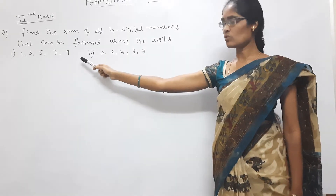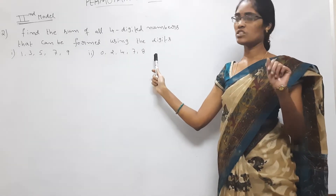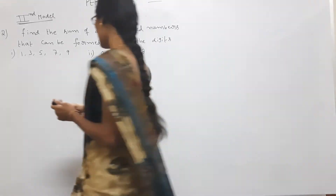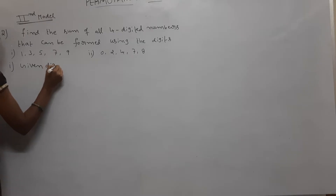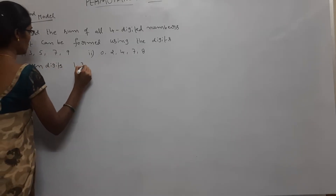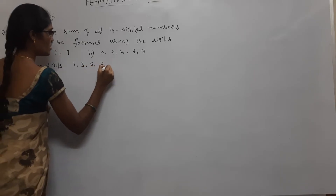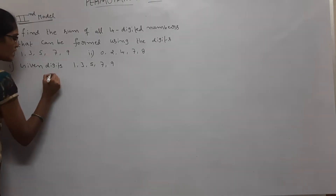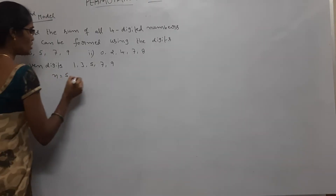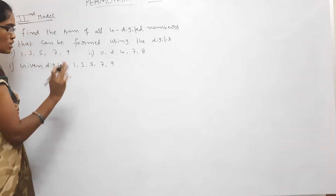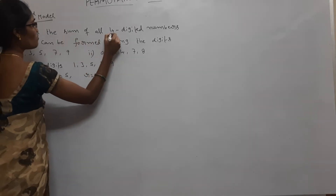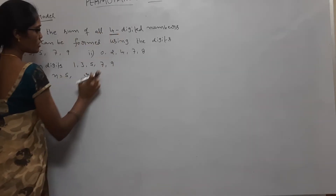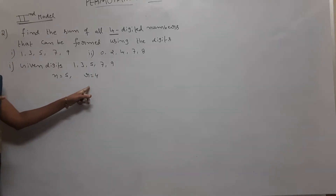The first question is without zero — digits 1, 3, 5, 7, 9. Here n is equal to 5 (five digits: 1, 2, 3, 4, 5). Next, r is equal to 4, because we need to find the sum of all four-digit numbers. So n = 5 and r = 4.